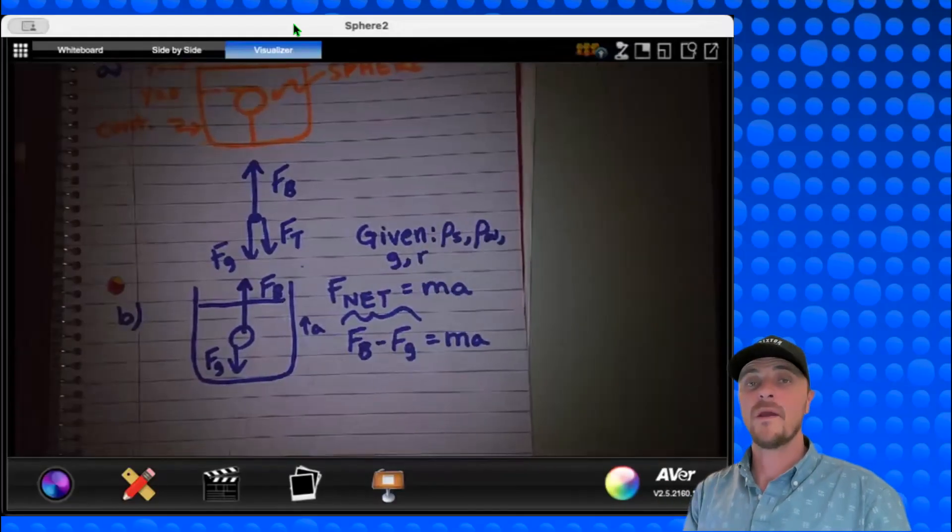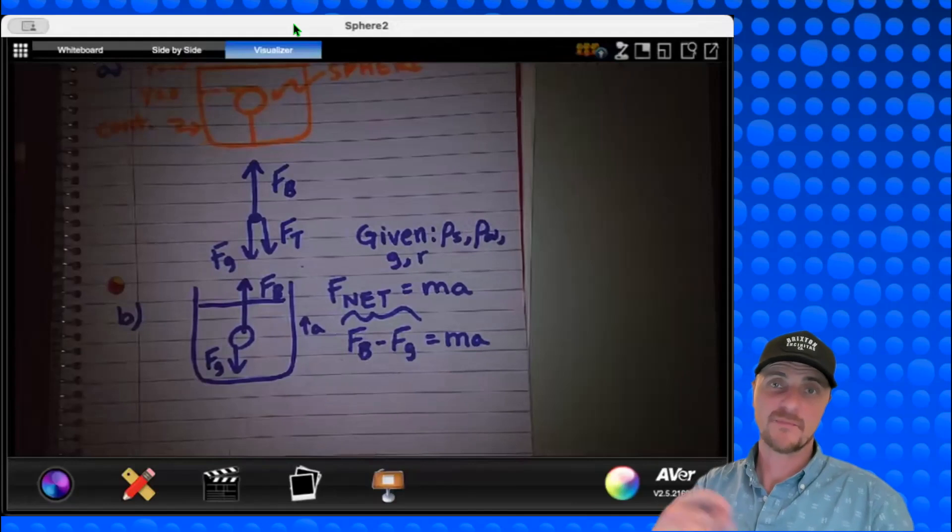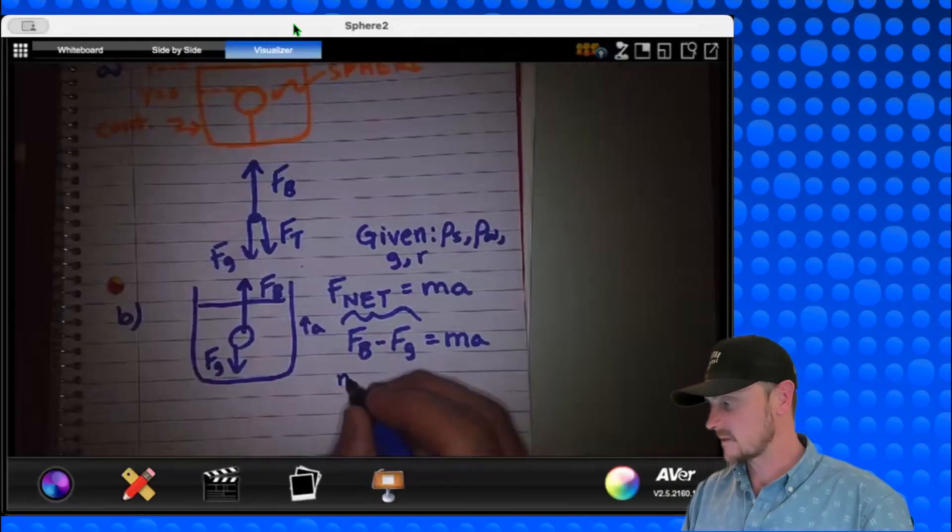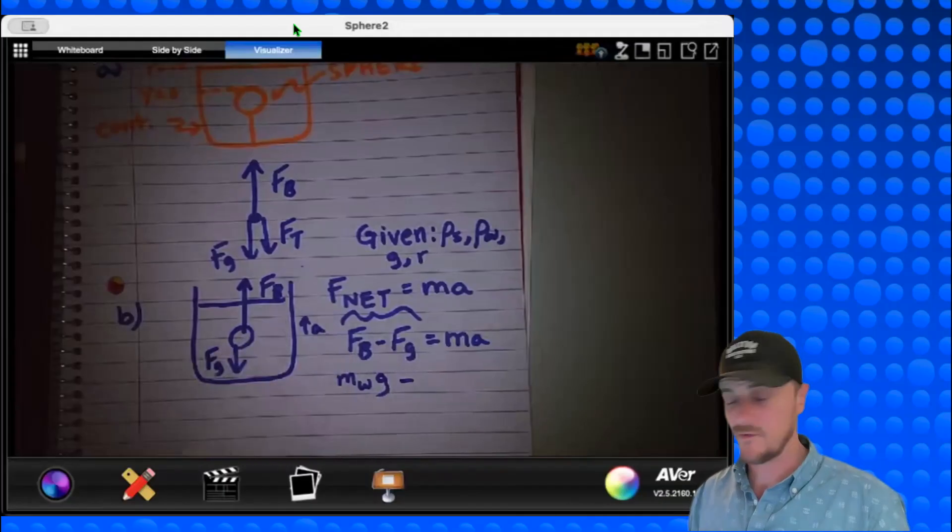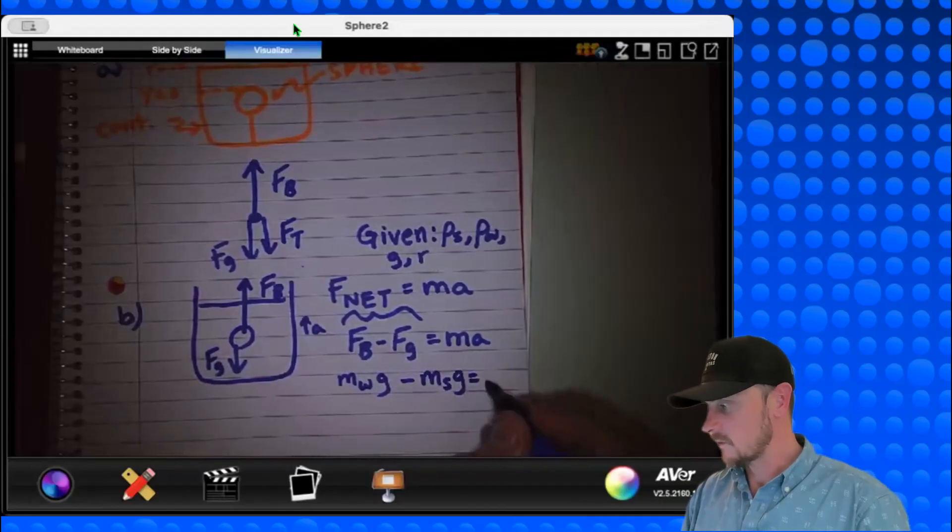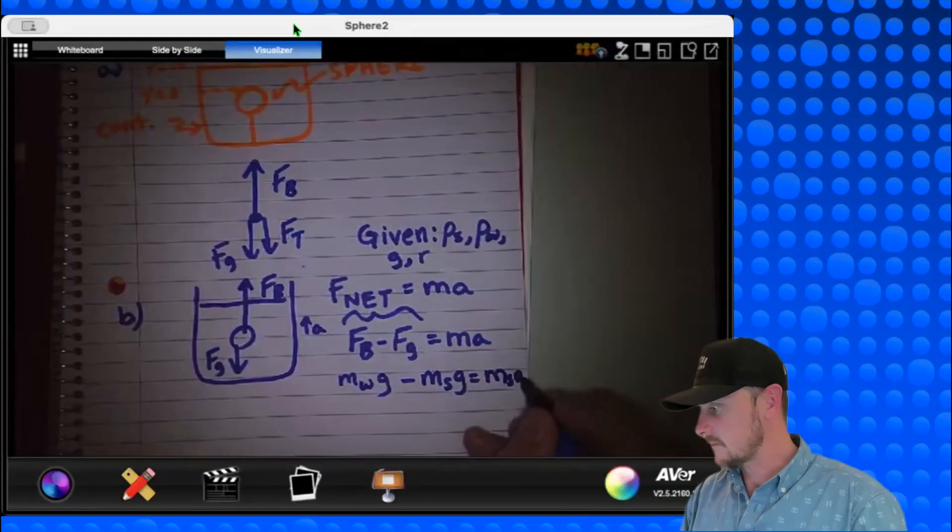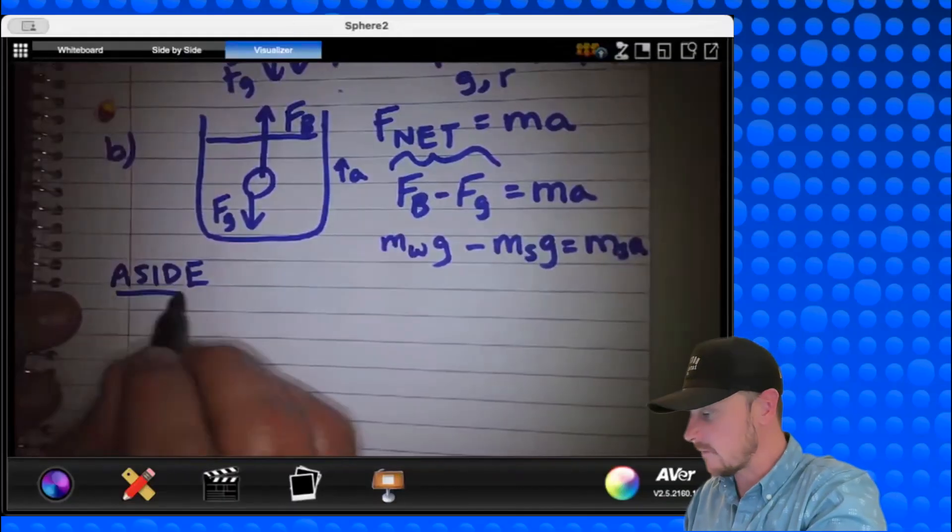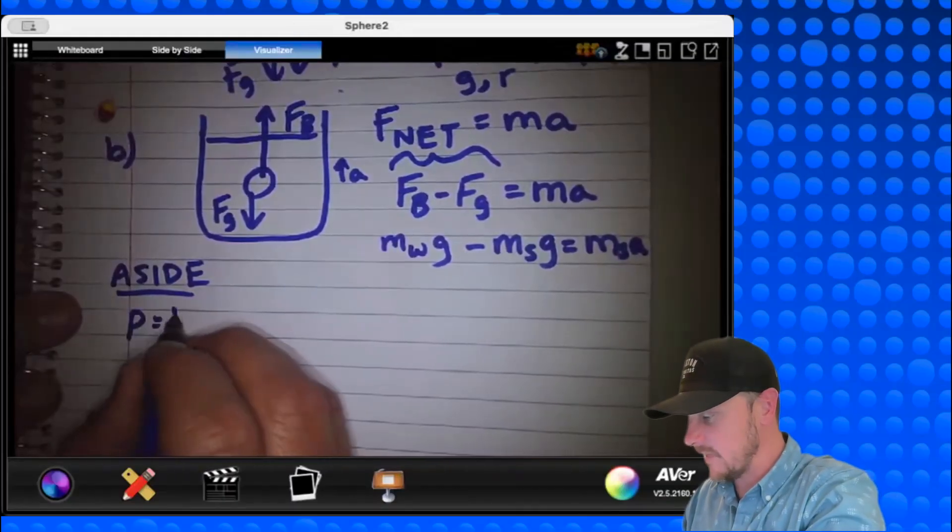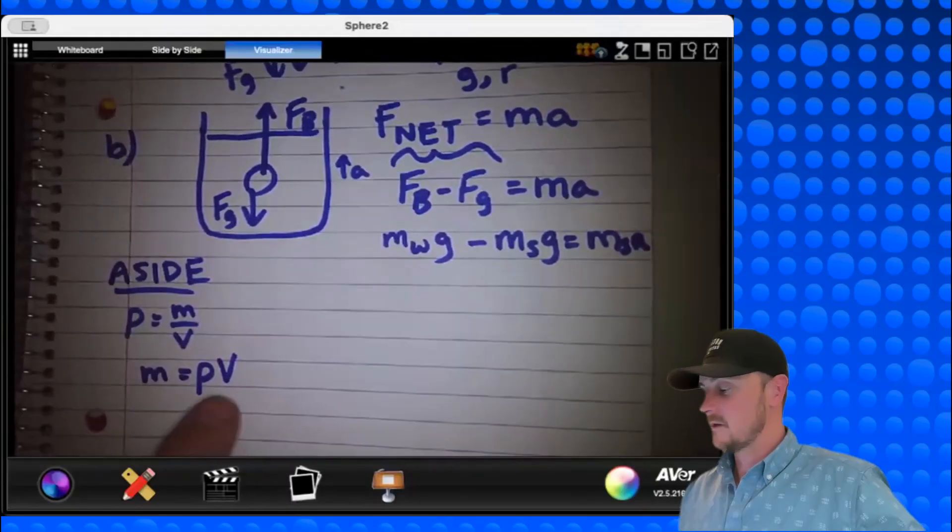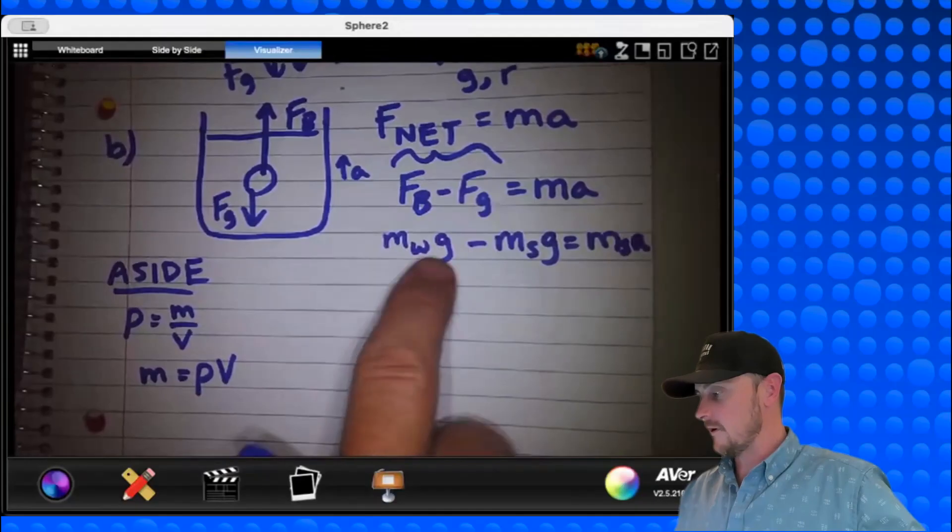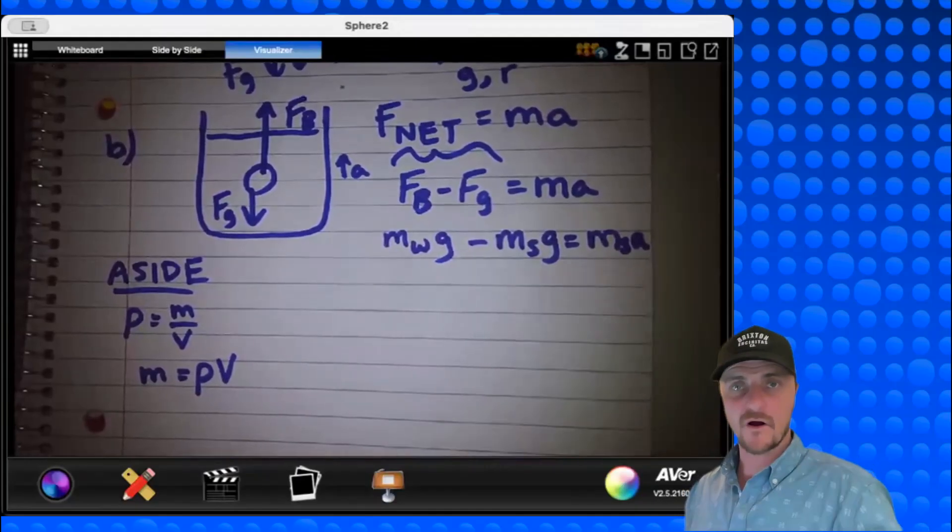So remember, the buoyant force is the weight of the water that's been displaced by the sphere, which would be the mass of the fluid that's being displaced times g, minus F_g, which is just the mass of the sphere times g, equals mass of the sphere times a. And as a quick aside, remember that density is equal to mass divided by volume. And so therefore, mass is equal to density times volume. So this expression can be inputted for each of these masses as follows.